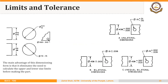Whenever specifying the size of a part or component on an engineering drawing, the designer specifies what is called the basic size. For example, 0.438 in this case is the basic size for this part — a diameter of 0.438. Practically it is impossible to make each component exactly equal to the basic size mentioned on an engineering drawing, because there are variations in the manufacturing process.